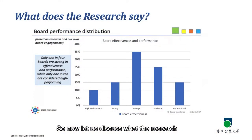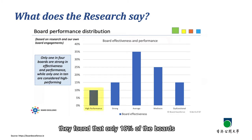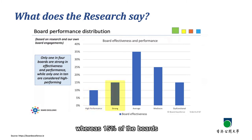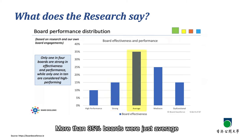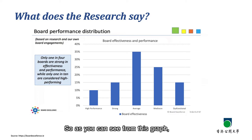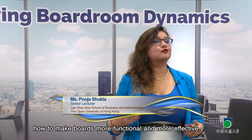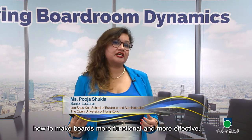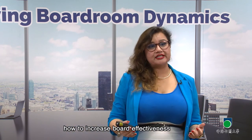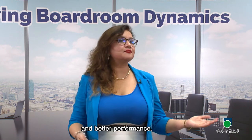Research by Board Excellence found that only 10% of boards are high-performance boards, whereas 15% are considered strong boards. More than 35% of boards were just average, 25% mediocre, and 15% dysfunctional. As you can see, not a lot of boards are functional, and that is why we are going to learn how to make boards more functional and effective, which would eventually lead to profitability and better performance.